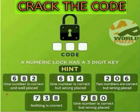Let's read out the hints. First hint: one number is correct and well placed. Second hint: one number is correct but in the wrong place. Third hint: two numbers are correct but in the wrong place. Fourth hint: nothing is correct. Fifth hint: one number is correct but wrong place.